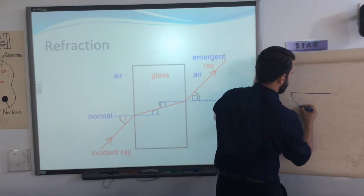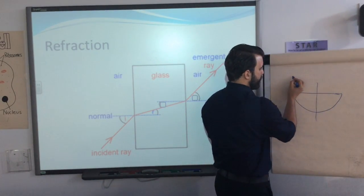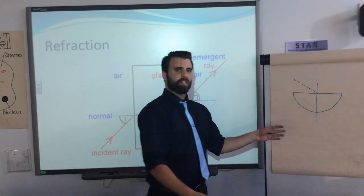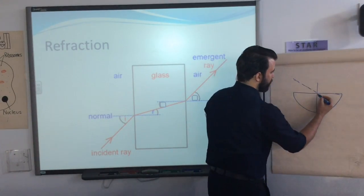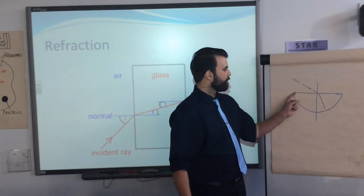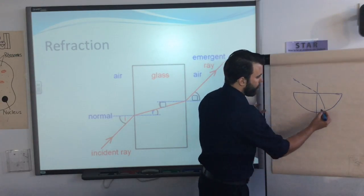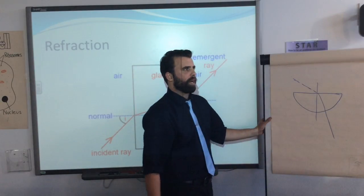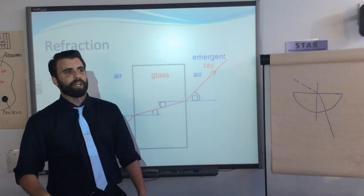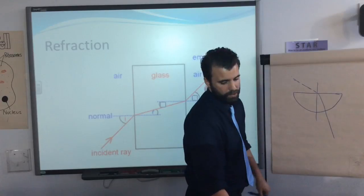A diagram they sometimes give is a glass semicircle. You show the angle of incidence and where the ray refracts and slows down on entry. Because it's a semicircle, wherever the ray hits the curved surface it's always at 90 degrees to the surface, so it passes straight through without bending at that point. Be aware of that detail.